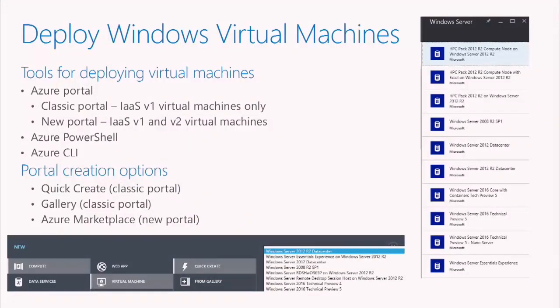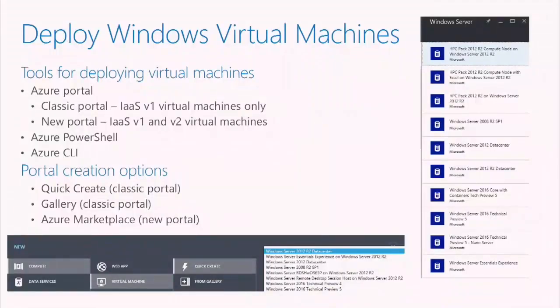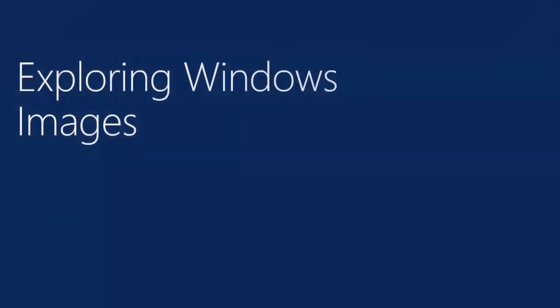There are several tools at your disposal to create VMs. You have the portal — both the new and the classic. The classic portal can only use version one virtual machines; the new portal can do both version one and version two, which are not to be confused with generation one and generation two. Version two VMs on Azure are created with the Azure Resource Manager. You can also do this via PowerShell or the Azure cross-platform client. In the new portal, creation is done via the Azure marketplace.